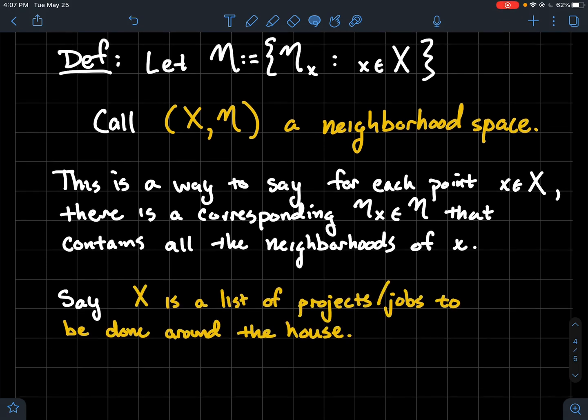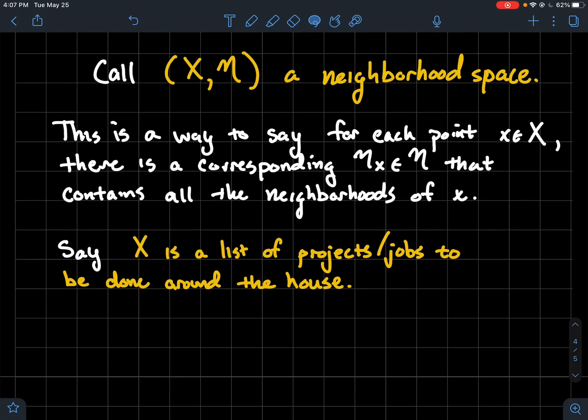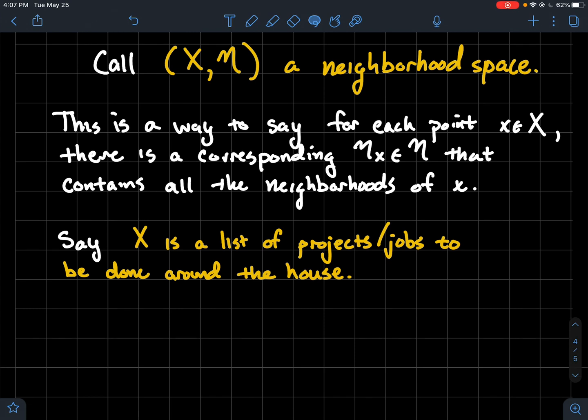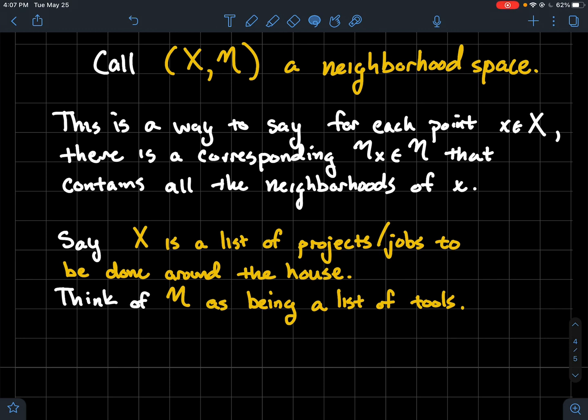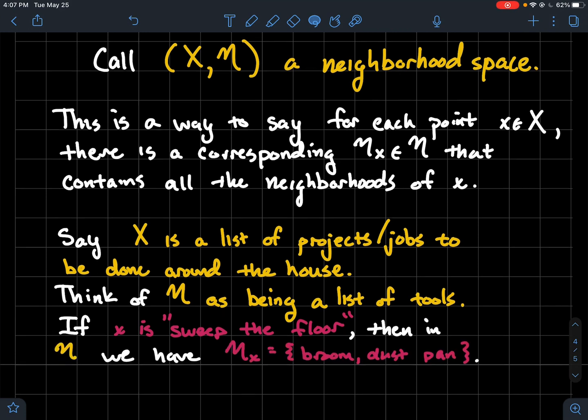And let's do kind of a silly non-math example just to try to get an idea of what we're trying to do here. Let's say X is just a list of projects or jobs to do around the house. And let's think of fancy N as just the list of all the tools that we have at our disposal. Like I don't necessarily need all the tools to do a particular job. But if I've got a job like sweep the floor, then I want to be able to go and get my tools that I need to sweep the floor. And so in my toolbox, in N, I can just go grab N sub x which is the broom and the dustpan.